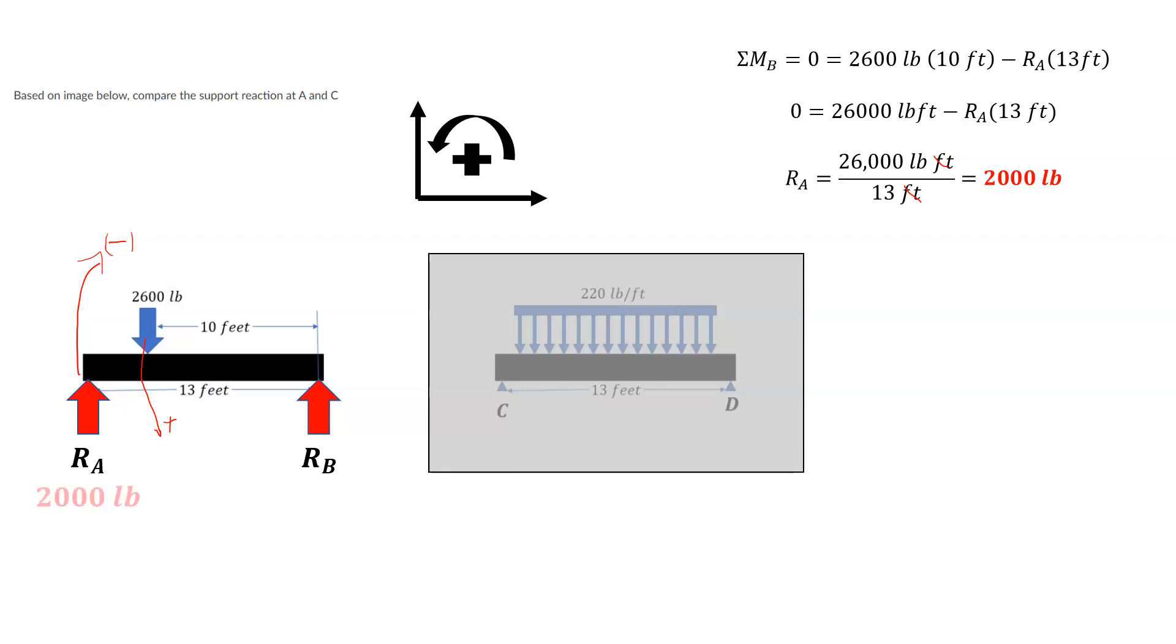So we know what reaction A is for certain. You can see that the position of that applied load between A and B dictates what the reaction is. If this had been all the way over, that would have changed the problem, if it had been less than 10 feet, that would have also changed the problem. So this is a function of the distance, the way that it creates that moment that dictates what that reaction is going to be.